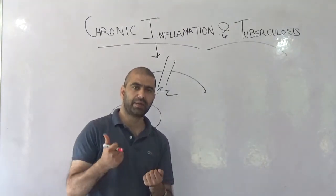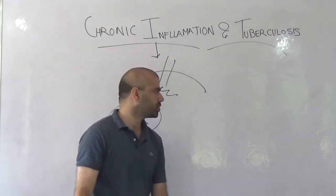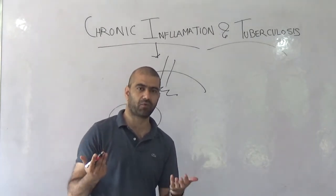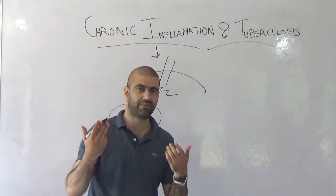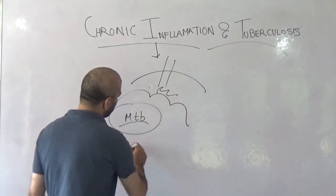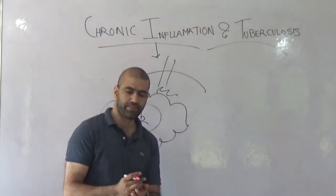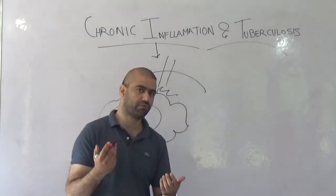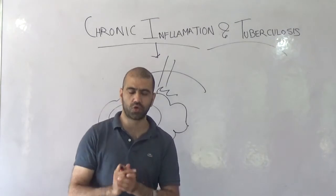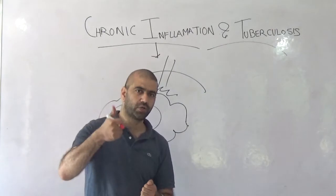Mycobacterium tuberculosis is not a simple bacteria. Once tissue injury takes place, this Mycobacterium tuberculosis penetrates our airways and goes inside our lungs, where it will be encountered by a macrophage called the alveolar macrophage. The alveolar macrophage will do what every macrophage does — phagocytosis. So the macrophage comes in and phagocytoses the tubercle bacilli.